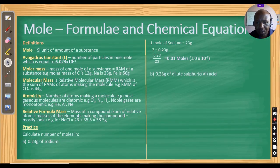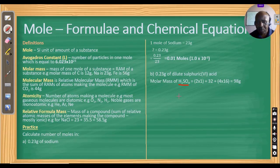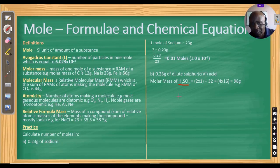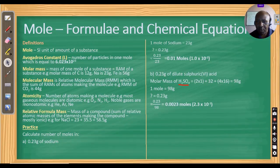You may also be asked to calculate the number of moles in 0.23 grams of dilute sulfuric acid. The formula is H₂SO₄. The relative formula mass is: 2 × 1 (hydrogen) + 32 (sulfur) + 4 × 16 (oxygen) = 98 grams. So 98 grams is 1 mole. You divide 0.23 by 98 and get 0.0023 moles.